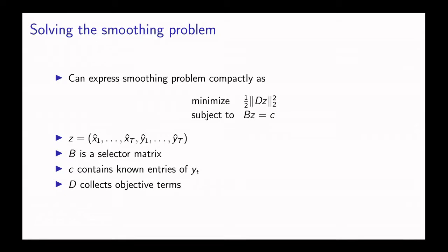We can express that problem very simply as a constrained least squares problem, where z is a vector of the concatenated variables in the previous problem. The matrix B is a selector matrix that selects the entries of z that we know.